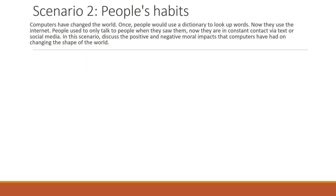Let's have a look at our second scenario, which deals with people's habits. Computers have changed the world. Once, people would use a dictionary to look up words; now they use the internet. People used to only talk to people when they saw them; now they're in constant contact via text or social media. In this scenario, we discuss the positive and negative moral impacts that computers have had on the changing shape of the world, and in particular on people's habits.